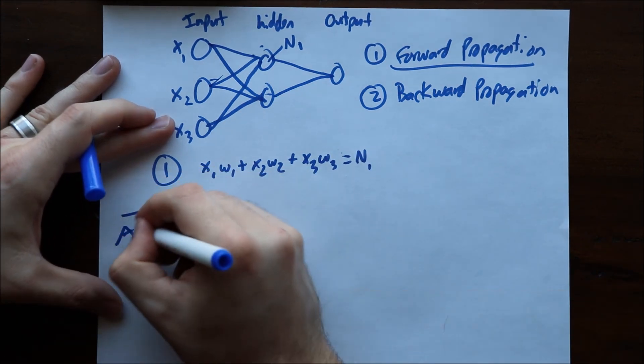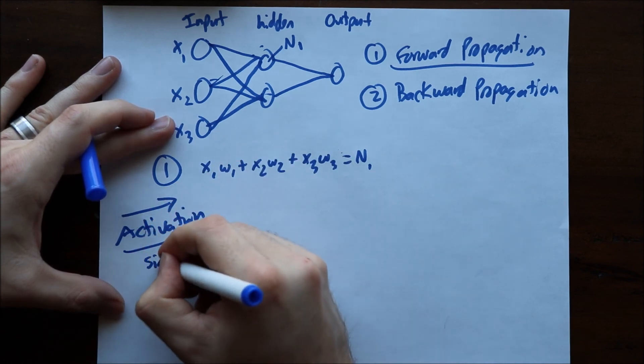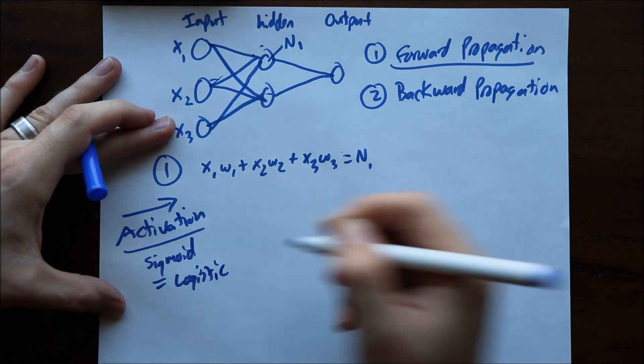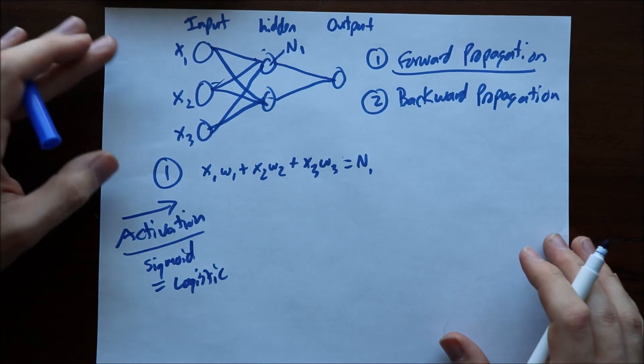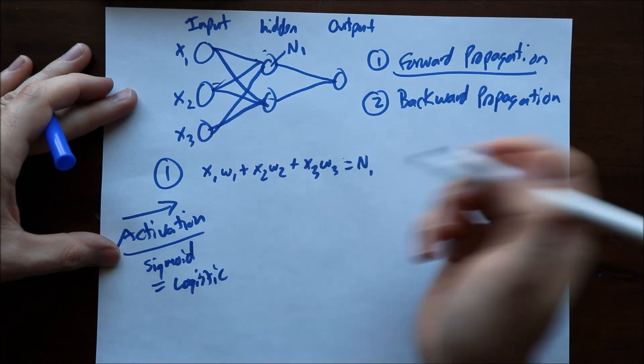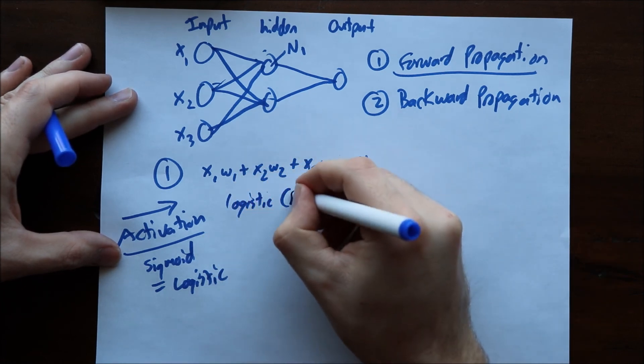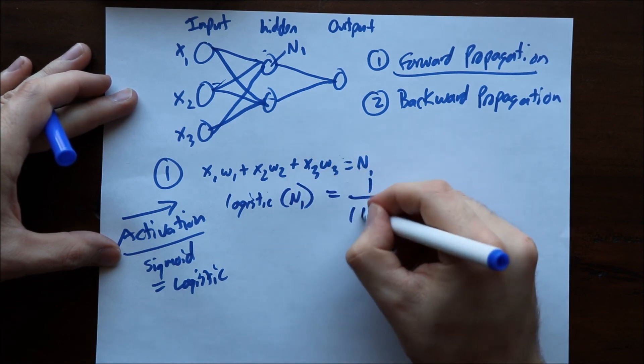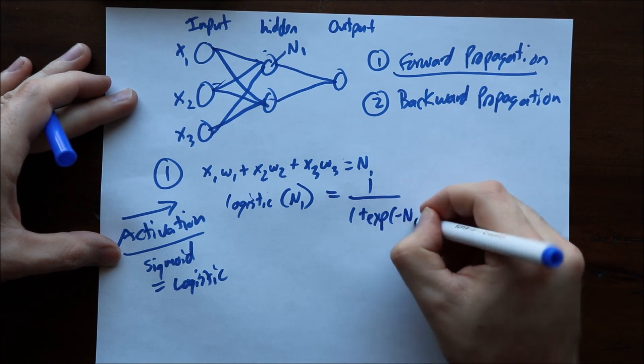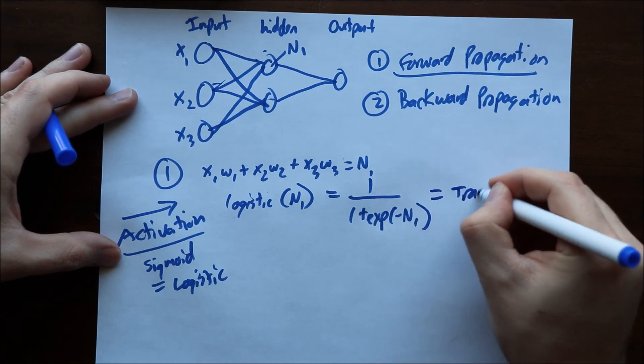You have to choose what they call an activation function and most commonly what I've seen is the sigmoid which is equivalent to logistic, but you can also use other different types of transformation functions. Now you take your n1, your neuron one, and you transform this. So you take the logistic of n1 and this would be 1 over 1 plus the exponent of negative n1. This is what we were actually doing and this will give you your transformed one and that will be the value that will go into here.